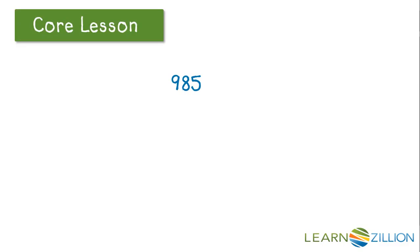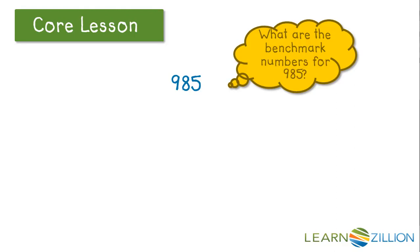Let's look at 985. What are the benchmark numbers for 985? If we focus on the 100's, we know that 985 falls between 900 and the next group of 100 is 1,000. We have to move to the next place value.